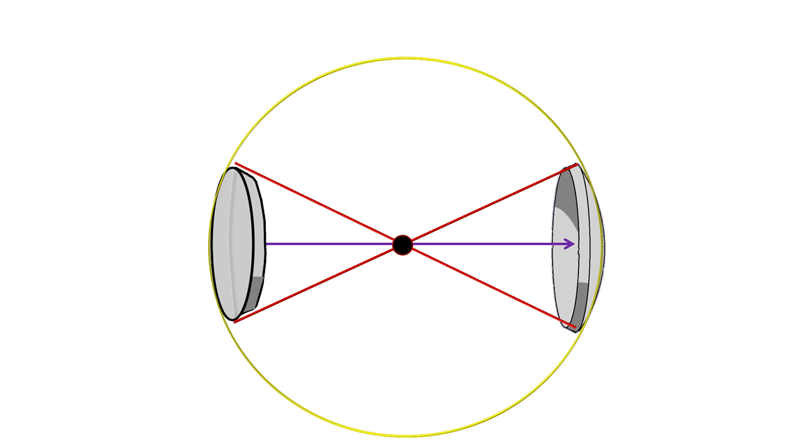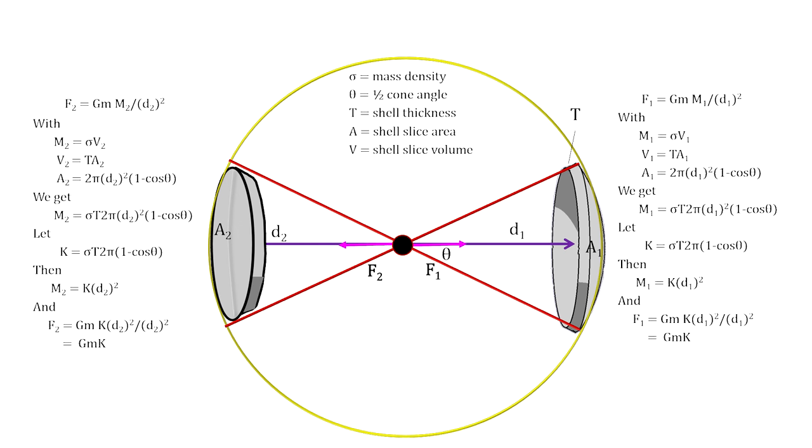A quick look at the geometry involved helps. If we put our object at the center and build a cone that intersects with the shell in two opposite directions, we can analyze the force on the object as it moves around inside the shell. At the center, all the forces cancel out.